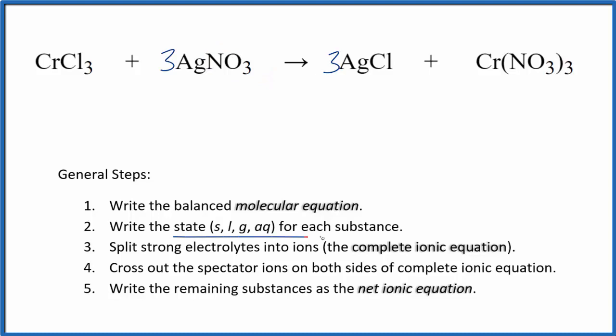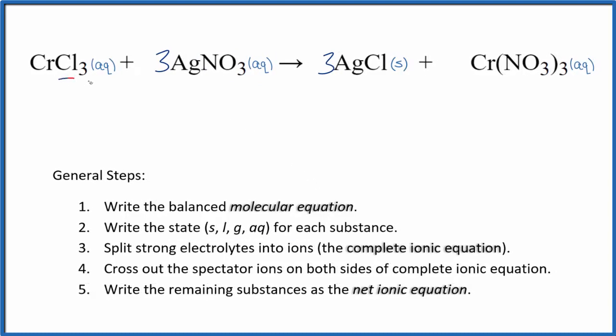Now we need to write the state for each substance. That looks like this. In general compounds with the chloride ion, they're aqueous. Nitrates are very soluble, so they will be aqueous. But there is an exception to the rule with chlorides, and that silver chloride is insoluble. So these substances react. We get this solid. This is a precipitate. It falls to the bottom of the test tube as a precipitate. So we have our states.